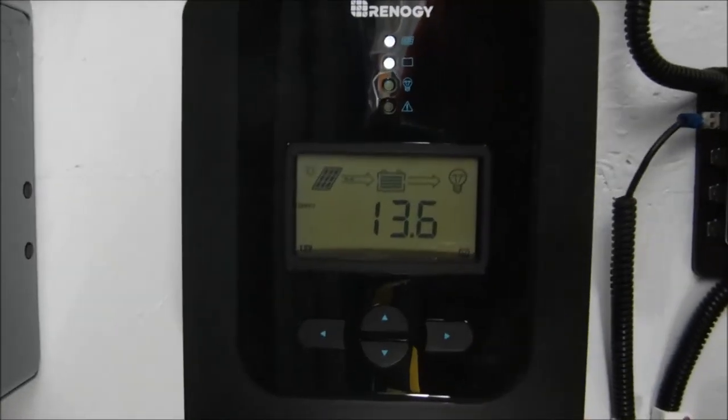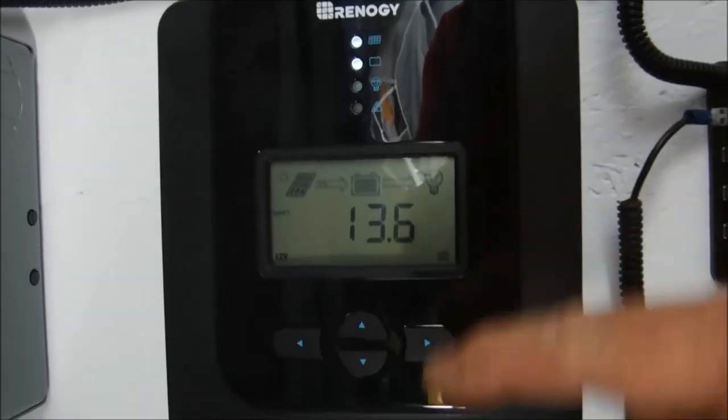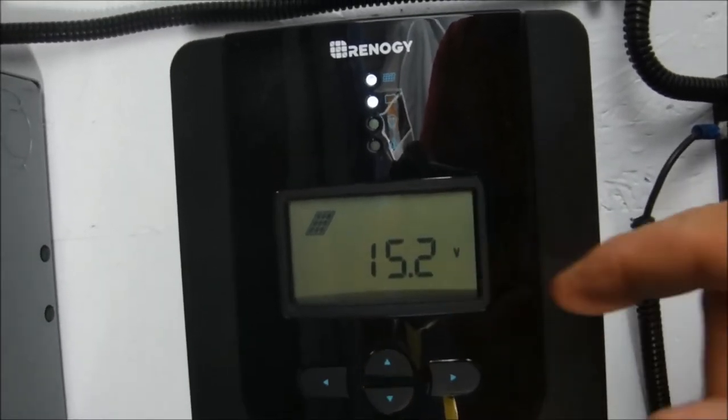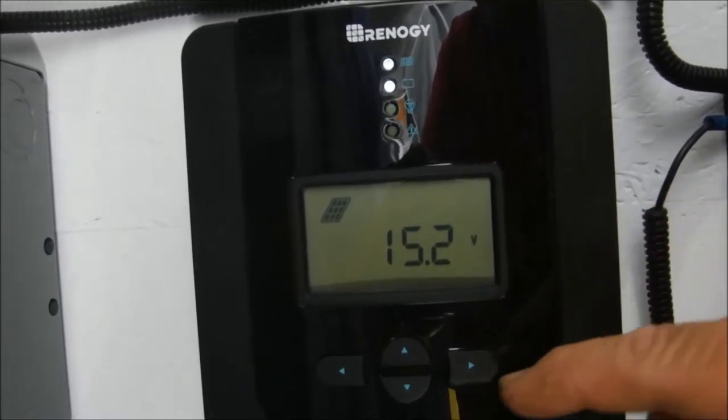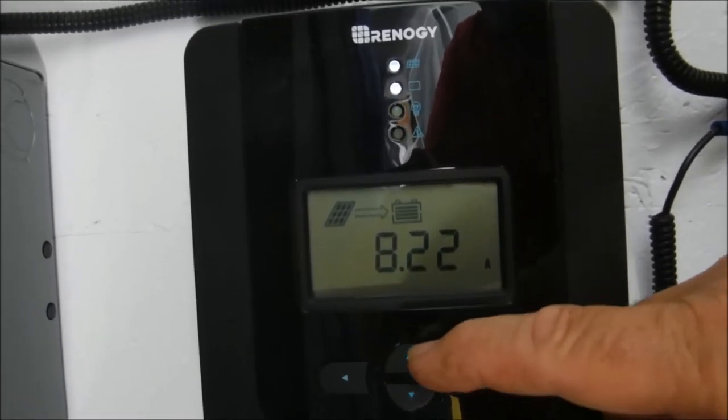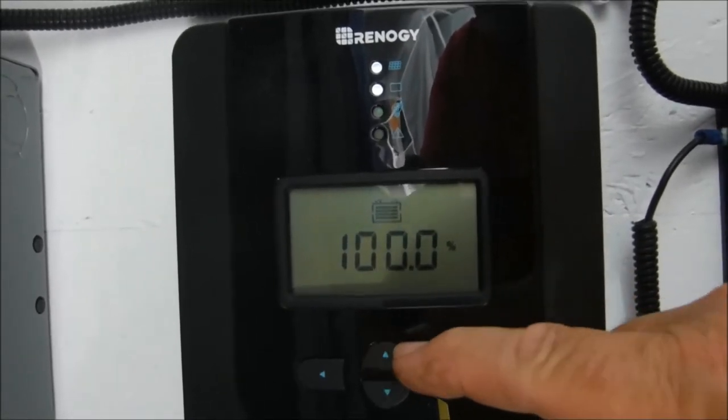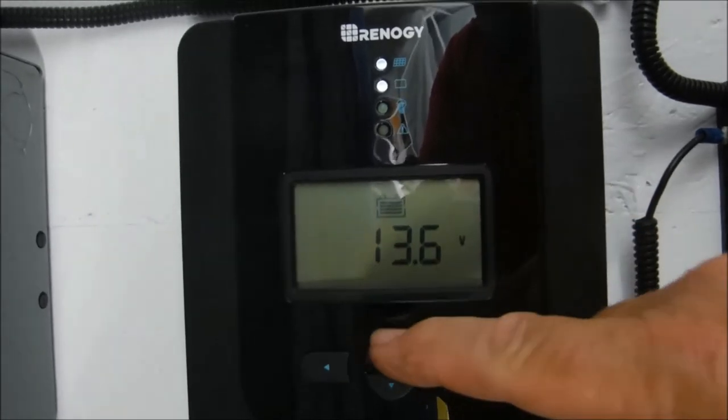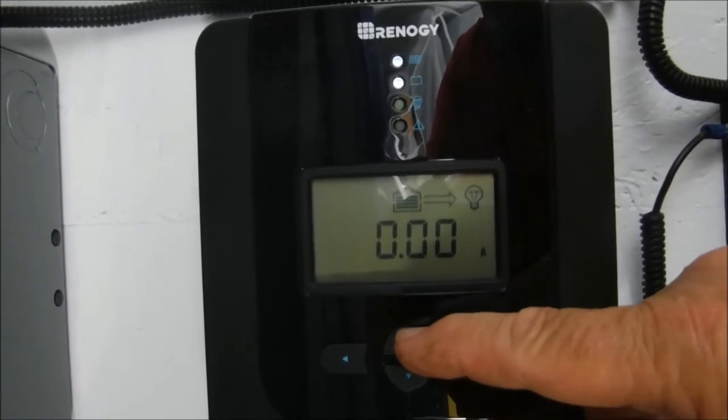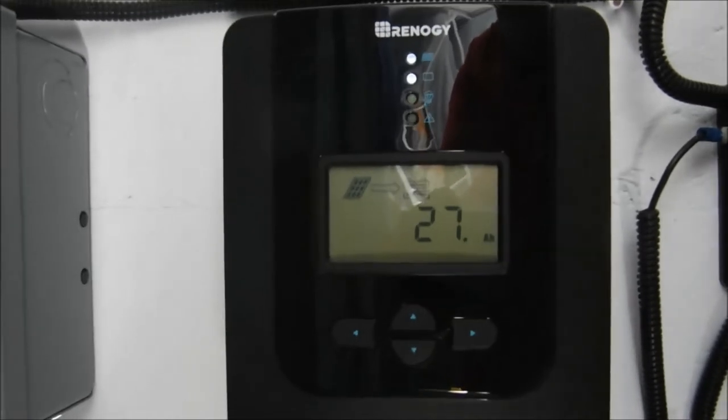Just taking a look at the charge controller here. I still have lots to learn about this. It's showing right now that the batteries are at 13.6 volts, 15.2 volts coming in from the panels, and 8.22 amps coming in from the panels. Batteries at 100 percent charge. 13.6 volts output right now is 0 amps because there's no draw on it, and 2.7 amp hours.